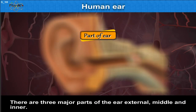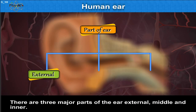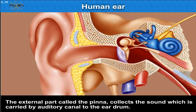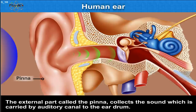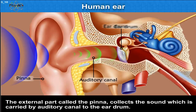There are three major parts of the ear: one, external; two, middle; and three, inner. The external part, called the pinna, collects the sound which is carried by the auditory canal to the eardrum.